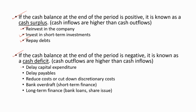Options to address a cash deficit include: delay the capital expenditure, delay payables, reduce costs or cut down discretionary costs, or use a bank overdraft as a short-term finance method. If longer-term finance is needed, the most common options are bank loans or share issue.